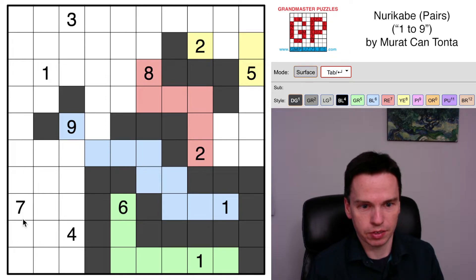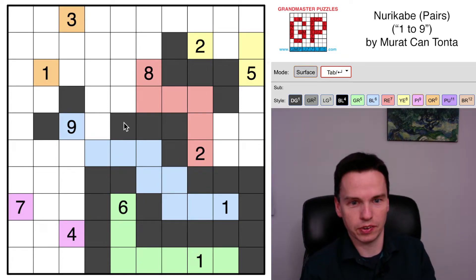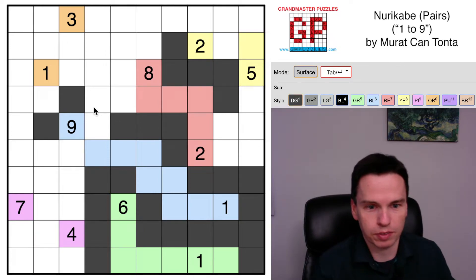This 3 can't get around to the 7 or 4, so we know that this is a group. And then we know that the last group will be these together. So this should be now just a straightforward Nurikabe puzzle if we work through it right.